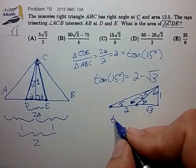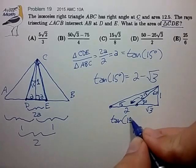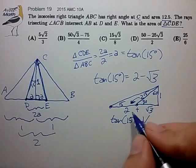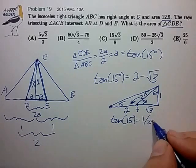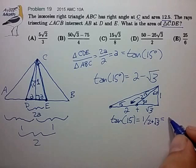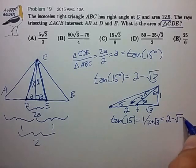And from that, we can quickly see that the tangent of 15 degrees is given by 1 divided by 2 plus root 3. And if you work out that radical, it is equal to 2 minus radical 3.